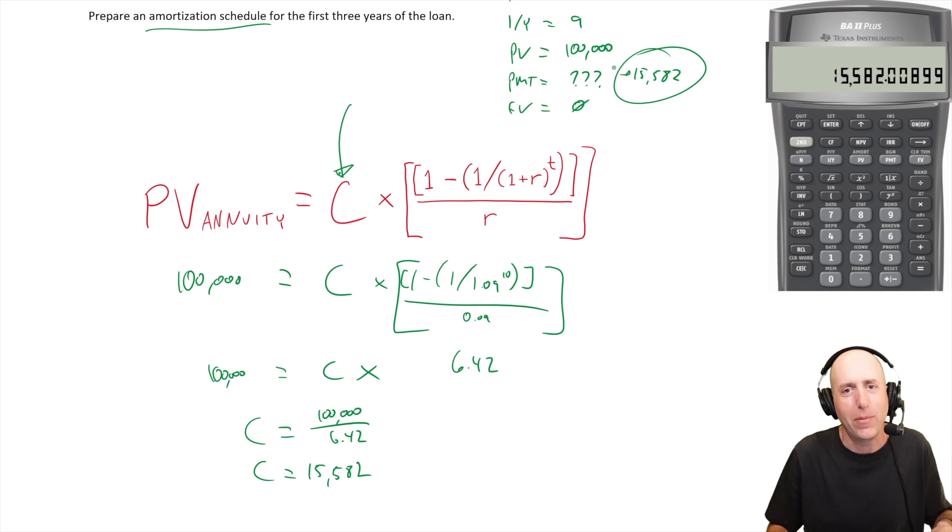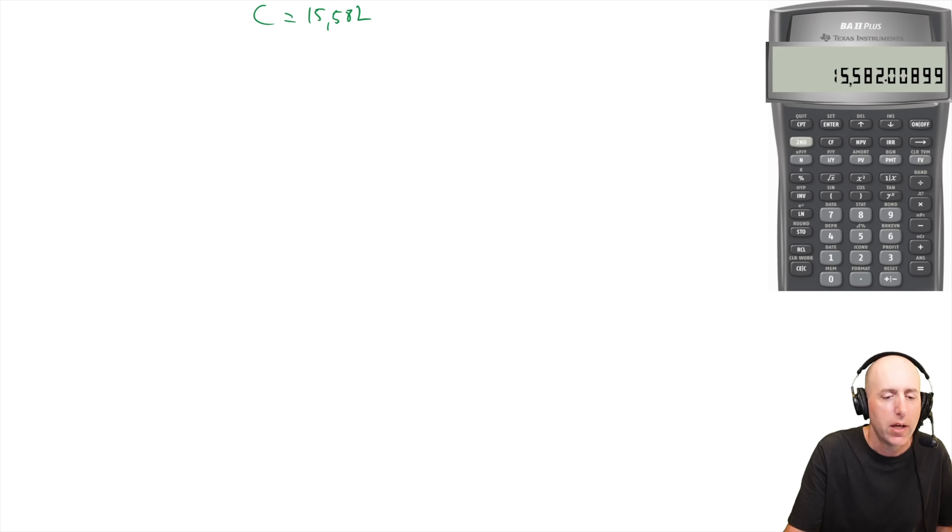So we've solved for the payment, but that isn't answering the question. That question said, give me an amortization schedule for the loan. Here's how we do it. We start with a beginning amount, beginning value, I suppose would be one way of putting it. The beginning value of our loan is a hundred thousand dollars. This is year one.